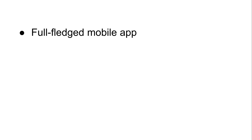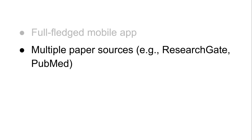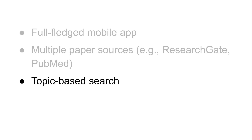Paper Whisperer is a cool application but it can definitely be improved. For now it's a simple console application, so it would be cool to turn it into a full-fledged mobile app with more features. Another improvement would be to have multiple paper sources — right now we only have arXiv.org, which is good for AI and computer science but not necessarily for other fields like the humanities or the arts. For those it would be cool to interact with sources like ResearchGate or PubMed. Finally, it would be cool to have topic-based search so you can choose which topics to follow and get updates accordingly.